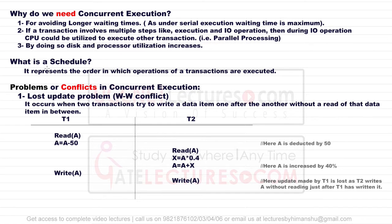There are problems related to concurrent execution where we may lose some data items while performing transactions in parallel. We will look at these one by one. The first is called the lost update problem, which is due to a write-write conflict. It occurs when two transactions try to write a data item one after another without a read of that data item between them.